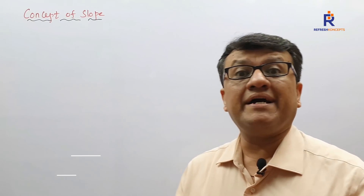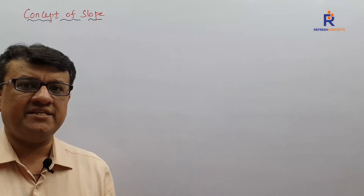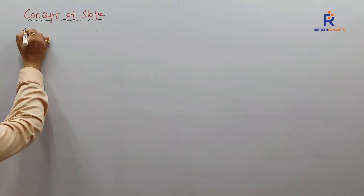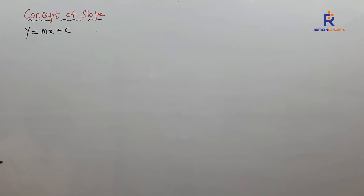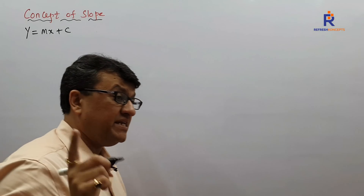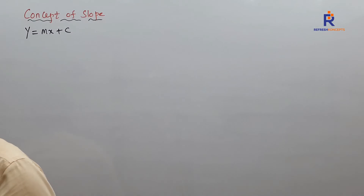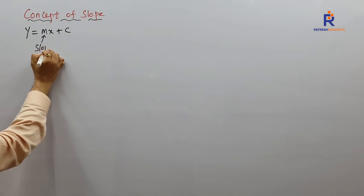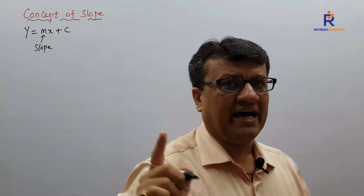Children, what do you mean by slope? We all are aware that a line when presented in slope-intercept form is given by y = mx + c. We all are aware of this — I have given an in-depth explanation in the equation of line. To make you understand once again, when I say y = mx + c, m is nothing but the slope.